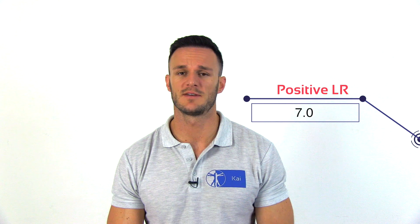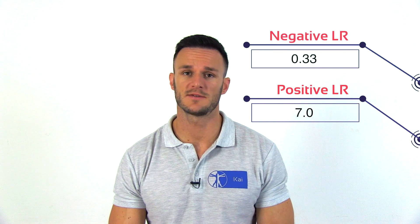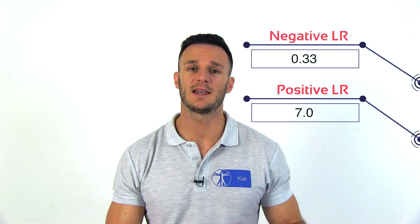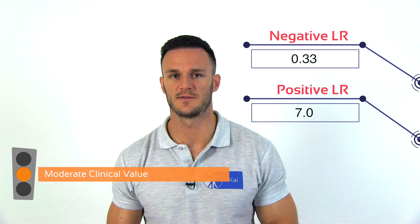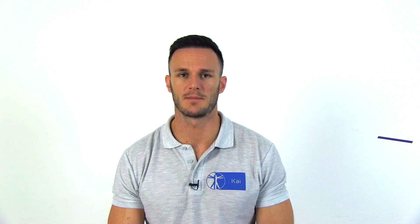According to a study done by Schlechter et al. in the year 2009, a combination of the active compression test and the passive distraction test yields a positive likelihood ratio of 7.0 for two positive tests and a negative likelihood ratio of 0.33 for two negative tests. This test cluster therefore has a moderate clinical value to confirm or rule out SLAP lesions.